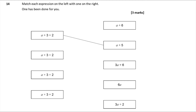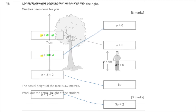Question 14 — match each expression on the left with the equivalent on the right. a + 3 + 2 simplifies to a + 5. a + 3 × 2 gives a + 6. a × 3 × 2 gives 6a. And a × 3 + 2 gives 3a + 2. Each matches accordingly.